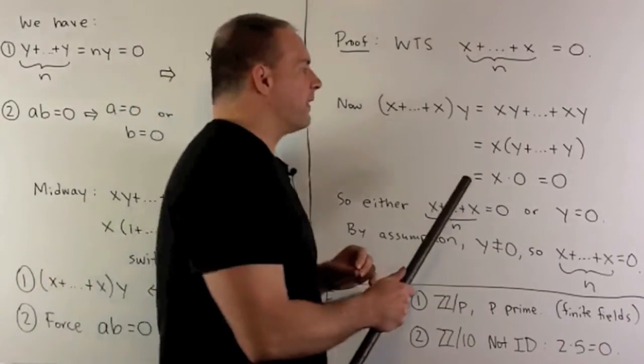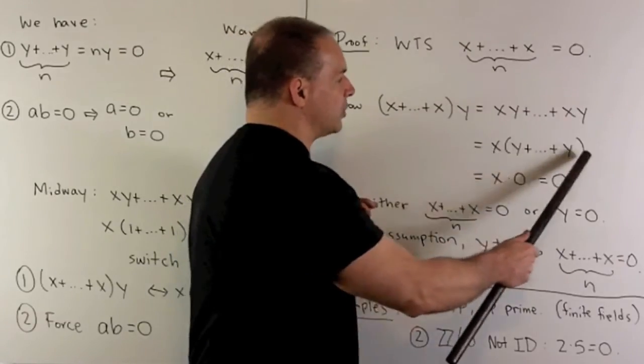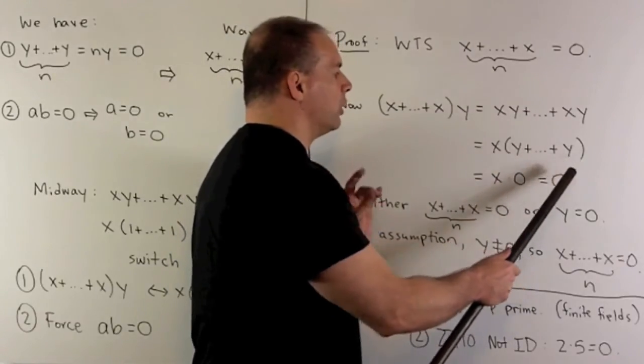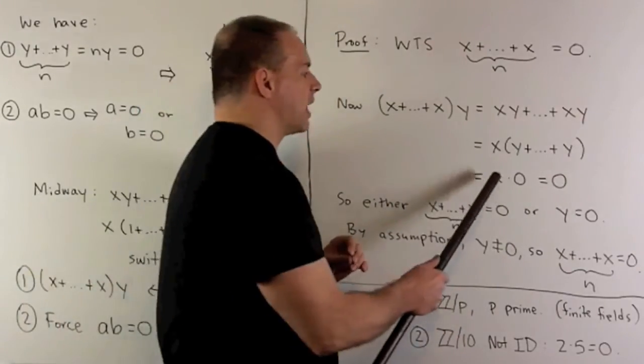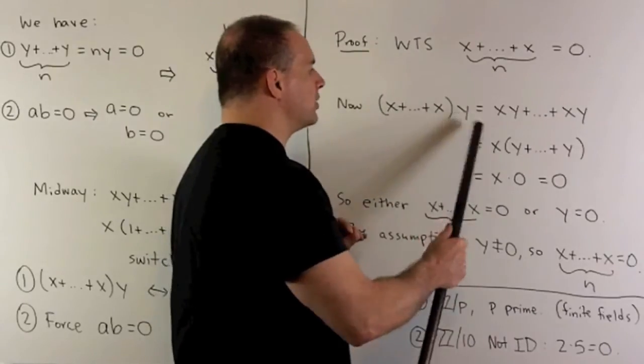Then I can factor an x out of the front. And since I have y added to itself n times here, we know that's going to be equal to zero. So I'm left with x times zero, and I get a zero. So that means this product here is equal to zero.